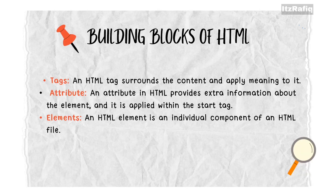First we'll learn the building blocks of HTML. In an HTML document, the building blocks are: tag, attribute, and element. A tag is surrounded by angular brackets — greater than and less than — and each tag has a special meaning to the HTML document. An attribute is written inside the tag and it increases the capability of the tag; it describes and makes the tag more advanced.